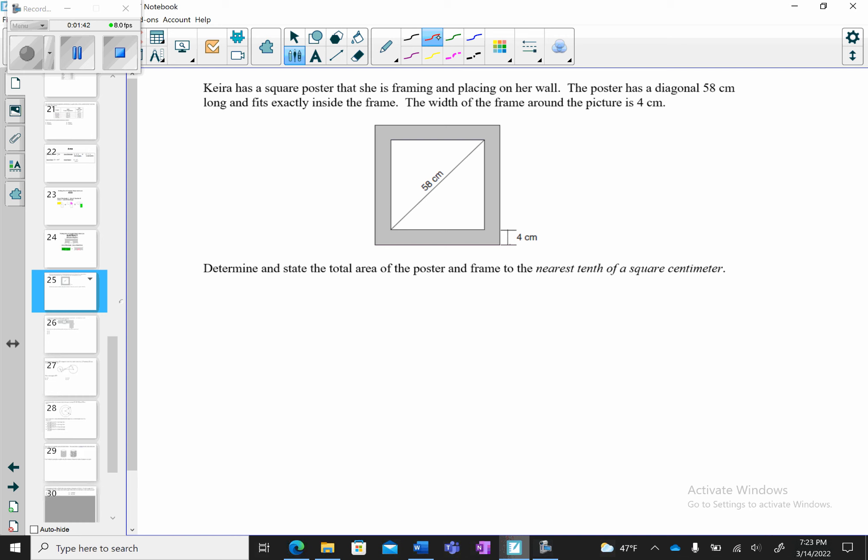Okay, so if you notice, we have a square. But the problem is, we don't know what this is. So I'm going to call this x. But because it's a square, we know that there's a right angle. And because it's a square, all sides are congruent. So I can put x here as well.